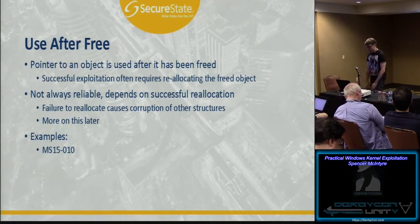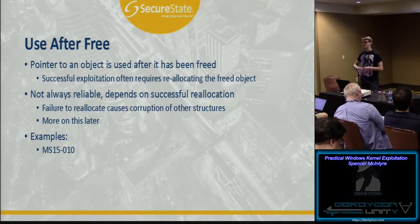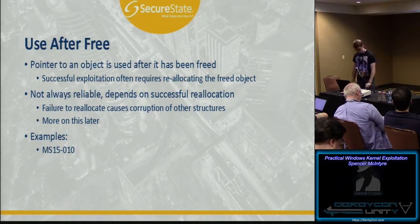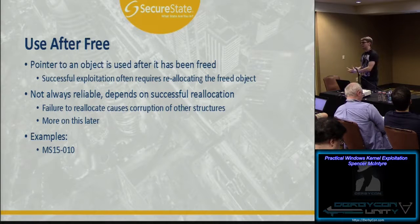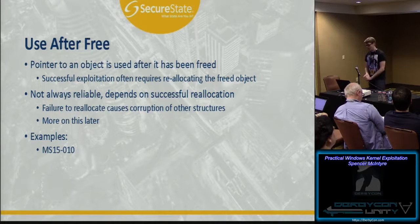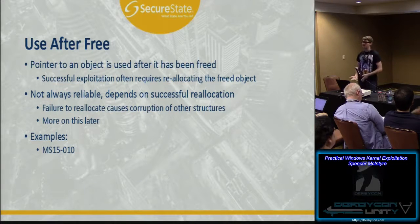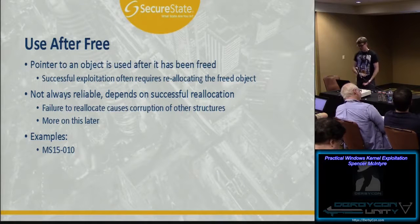Use-after-free is kind of similar to null pointer dereference in that an invalid memory location is being used to refer to an object. Out of the three vulnerability classes we're discussing, this is probably the most difficult to reliably exploit because it usually requires you to successfully reallocate the memory that was originally freed — that's very critical and not always easy to do. Additionally, you don't always know if you have successfully reallocated it.